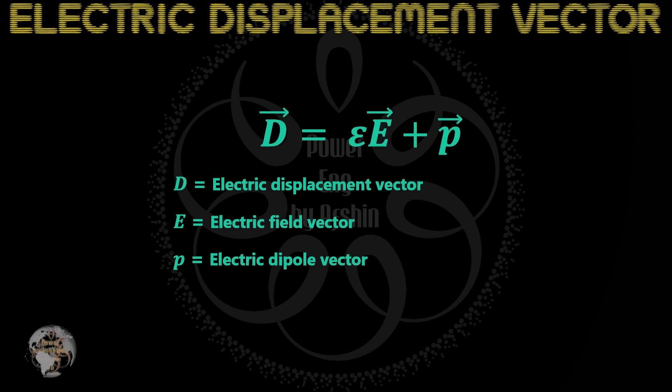Another vector that can be defined in an electric field is the electric flux density, or the electric displacement field, which is derived from the following equation. In this equation, the effect of electric dipoles in the electric field is also taken into account. The electric displacement field is independent of the material.